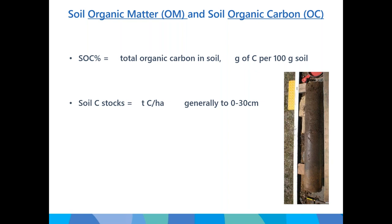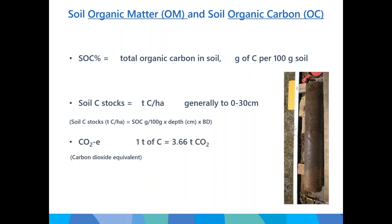To calculate soil organic carbon stocks, you need the concentration of carbon in soil (grams per 100 grams), the depth over which the sample was collected, and the bulk density of the soil — the mass of soil for a given volume. The other unit we talk about is carbon dioxide equivalents: one tonne of carbon in your soil is equivalent to 3.66 tonnes of carbon dioxide.